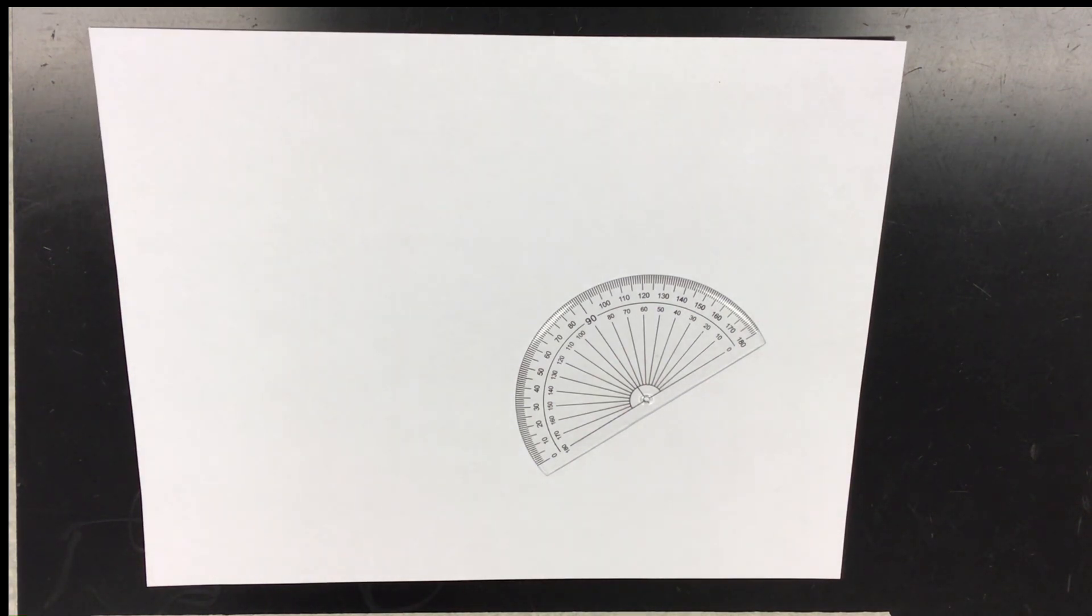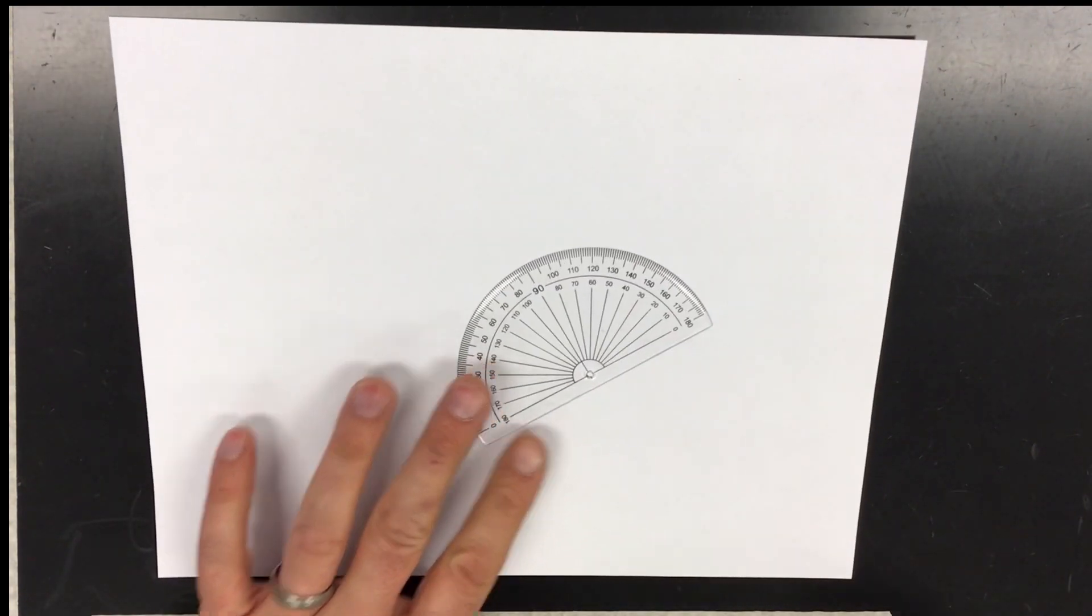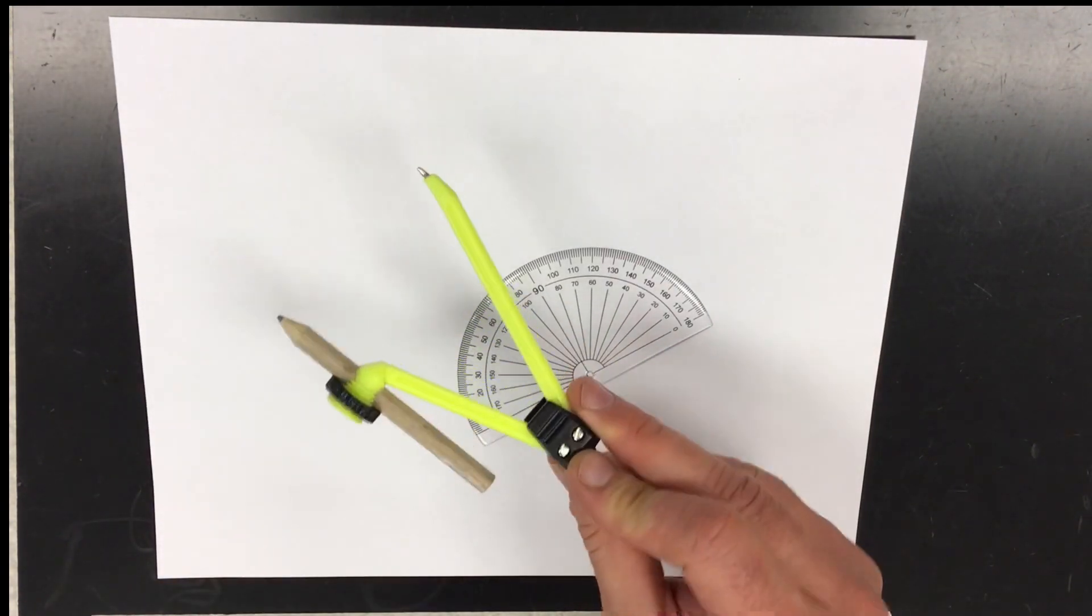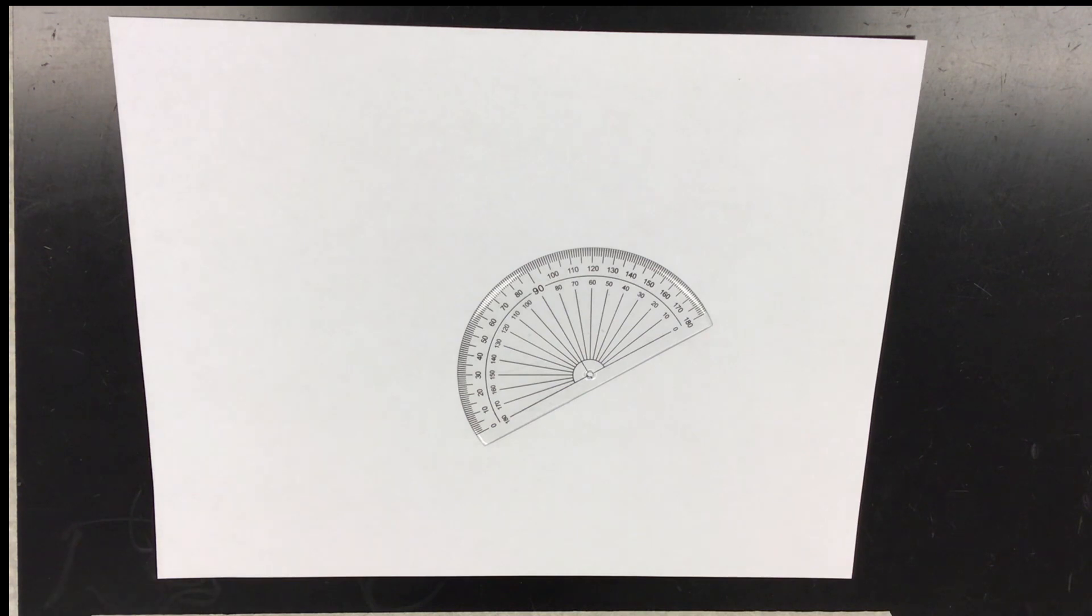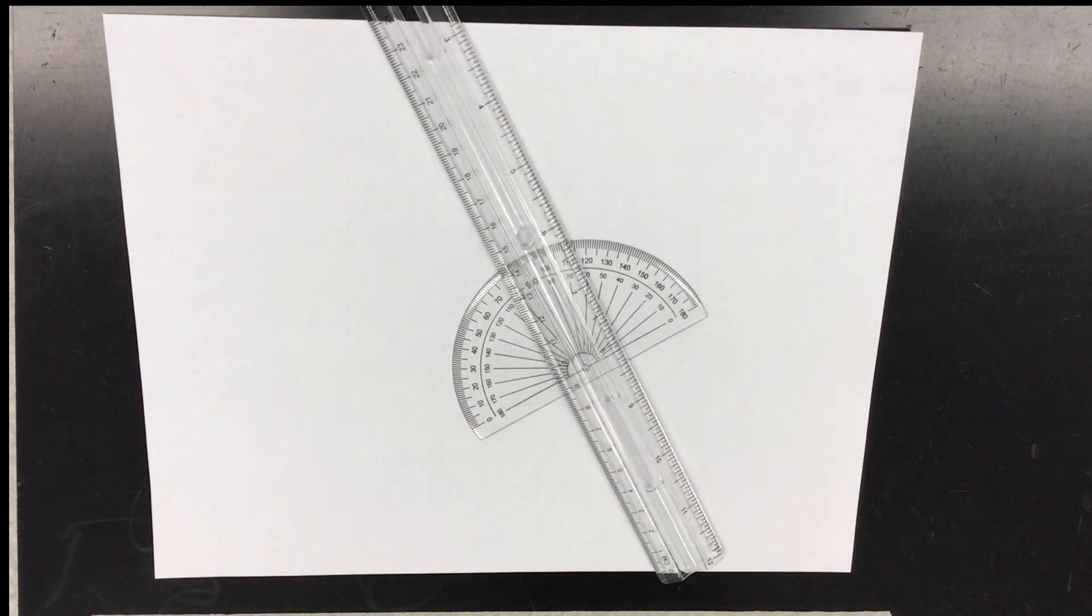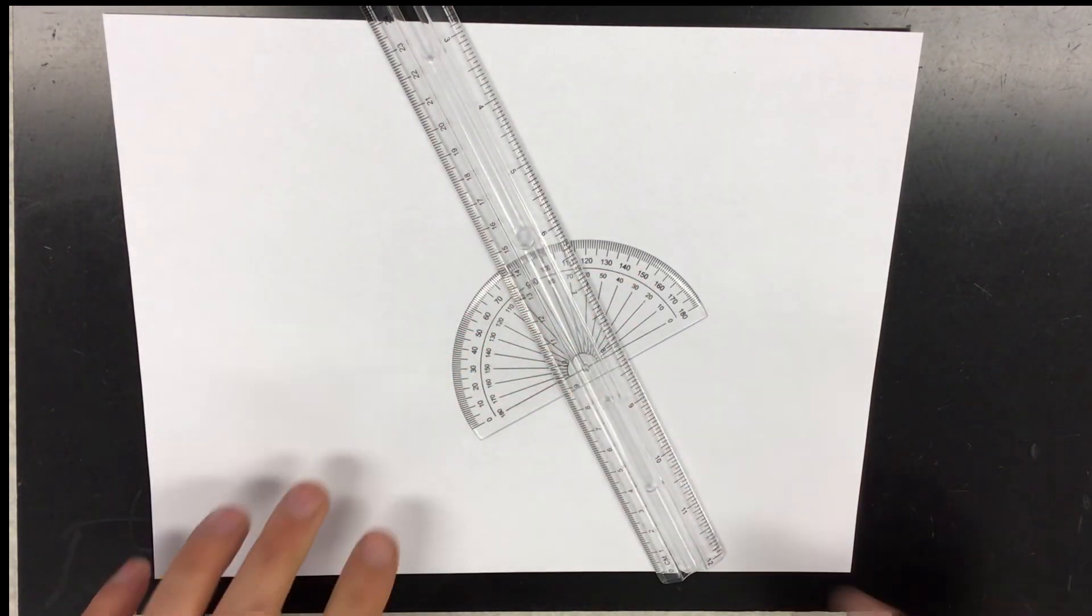I have a protractor, a compass to draw the pretty circle, a nice transparent ruler to draw things properly. I have a blue pen, which I think functions, a black pen that definitely functions, and a red pen.